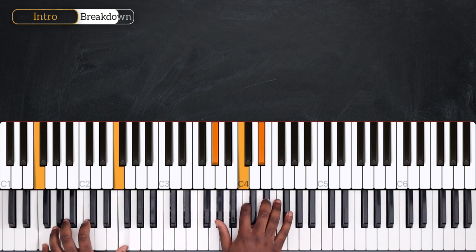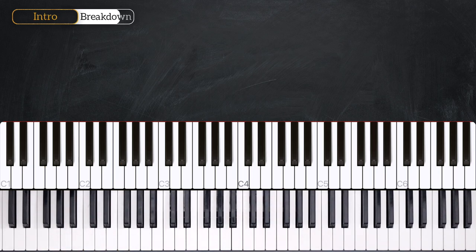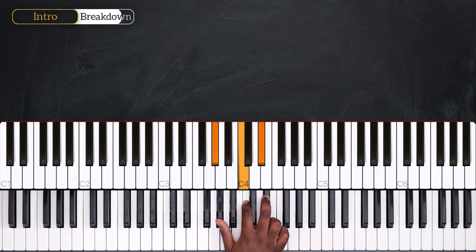Then for F minor 7, here also we're going to change the top note. So we have Ab, C, Eb. Then Ab, C, G. Back to Ab, C, Eb.